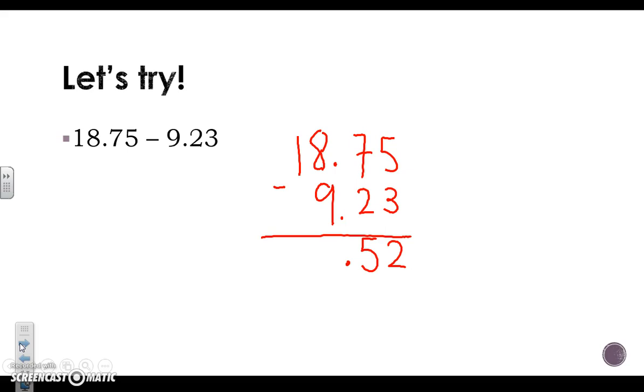We have to do 8 minus 9 which we can't do so we're going to have to borrow from the tens place making this a 1, making 8 now an 18. 18 minus 9 is 9 leaving us with an answer of 9 and 52 hundredths.